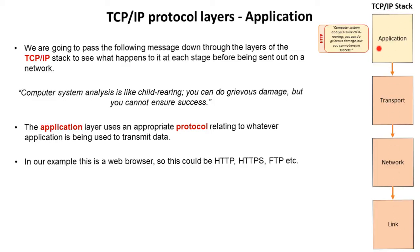The first layer it has to go through is the application layer. As the name suggests, this layer uses an appropriate protocol relating to whatever application is being used to transmit the data. In our example we're going to pretend this is a web browser, so that protocol could be HTTP, HTTPS, or FTP — protocols we're going to cover later on. A header, which in real terms is additional ones and zeros, is added to this packet of data so we know what application needs to process it at the other end.